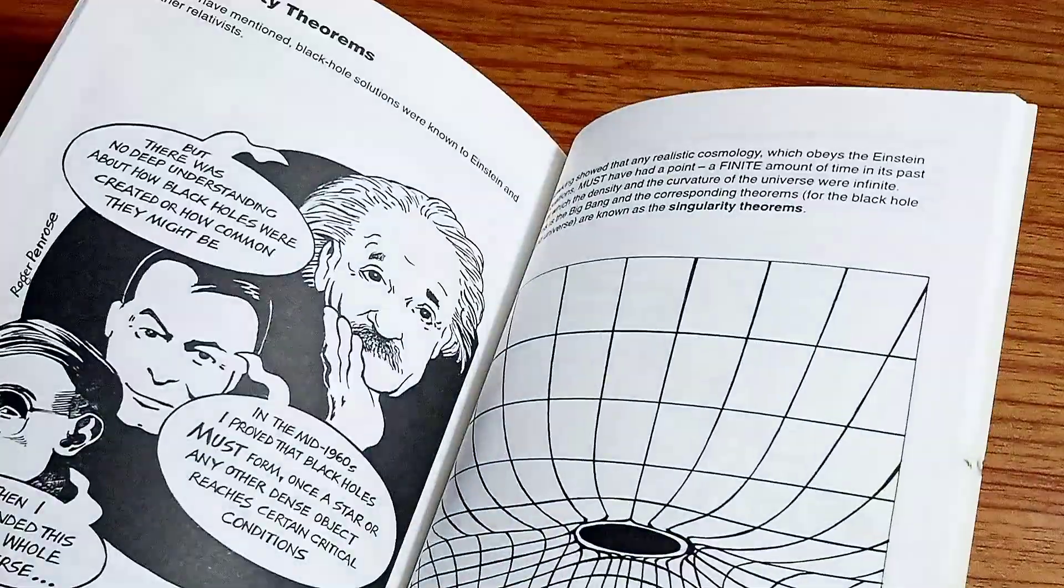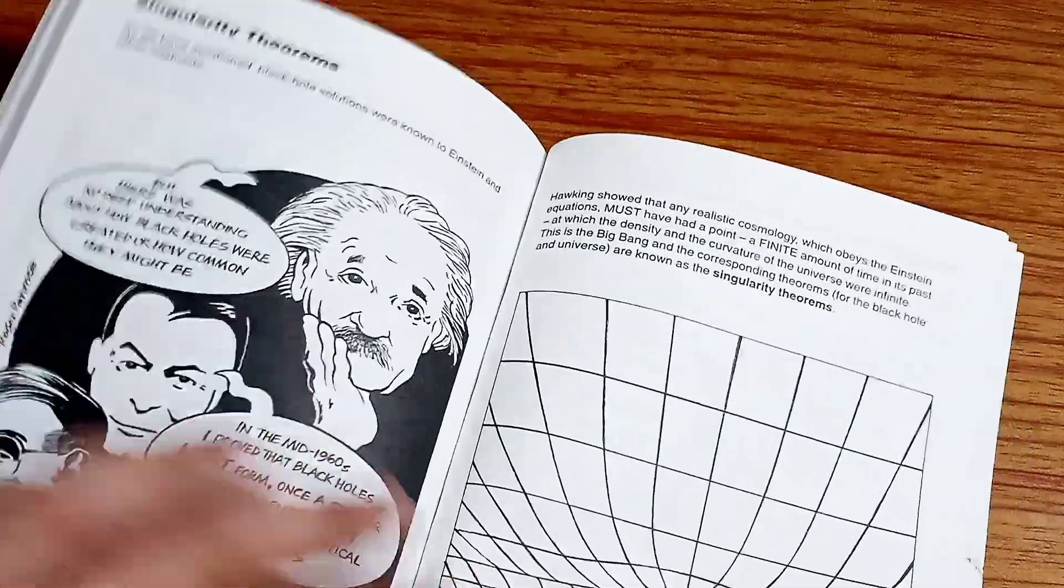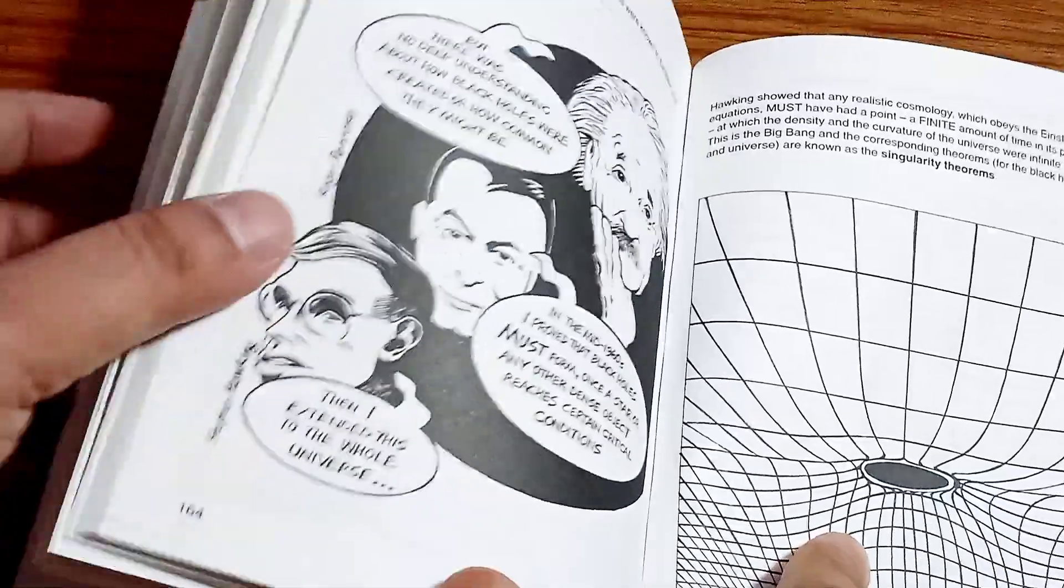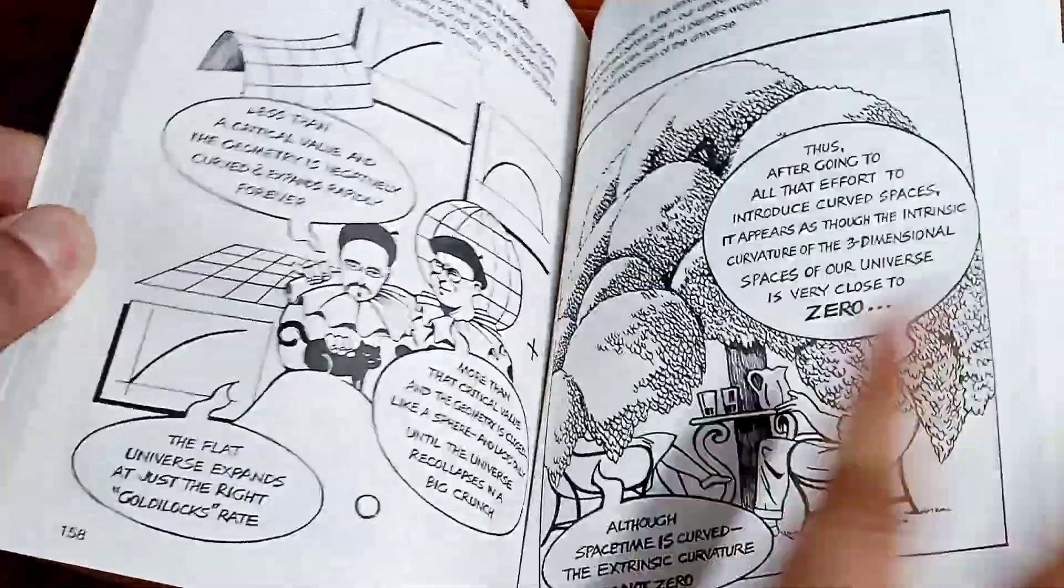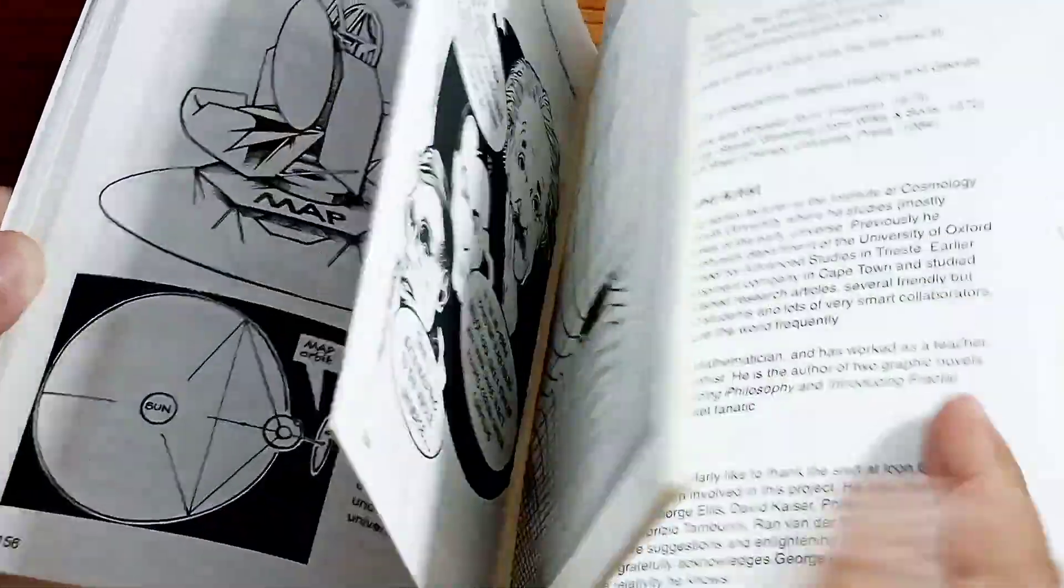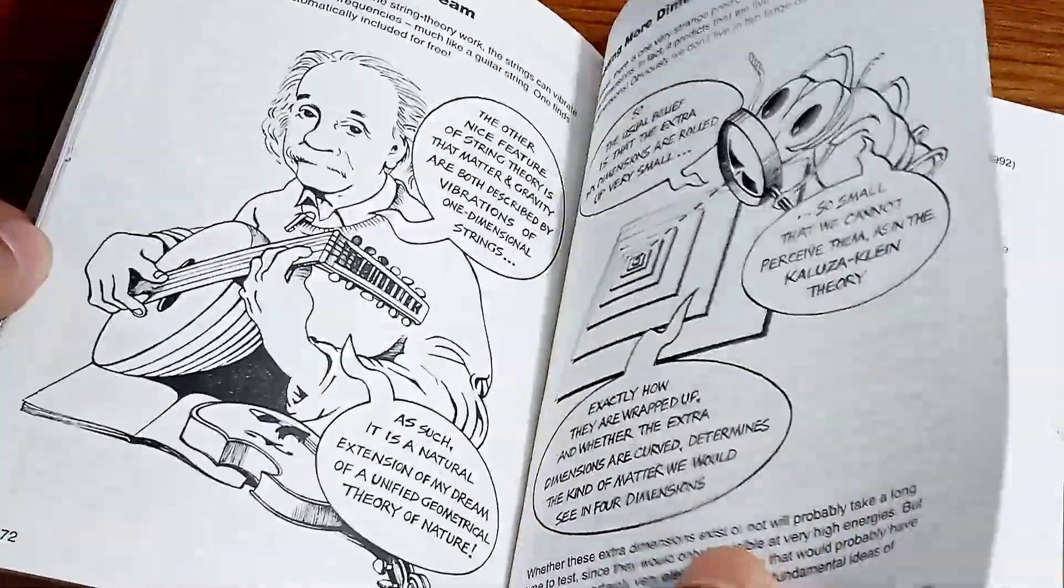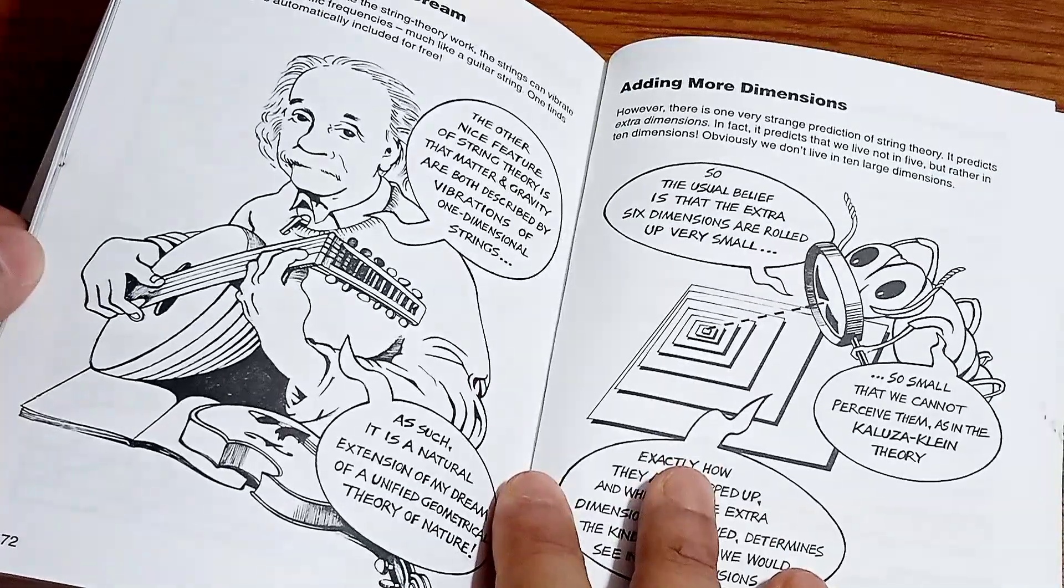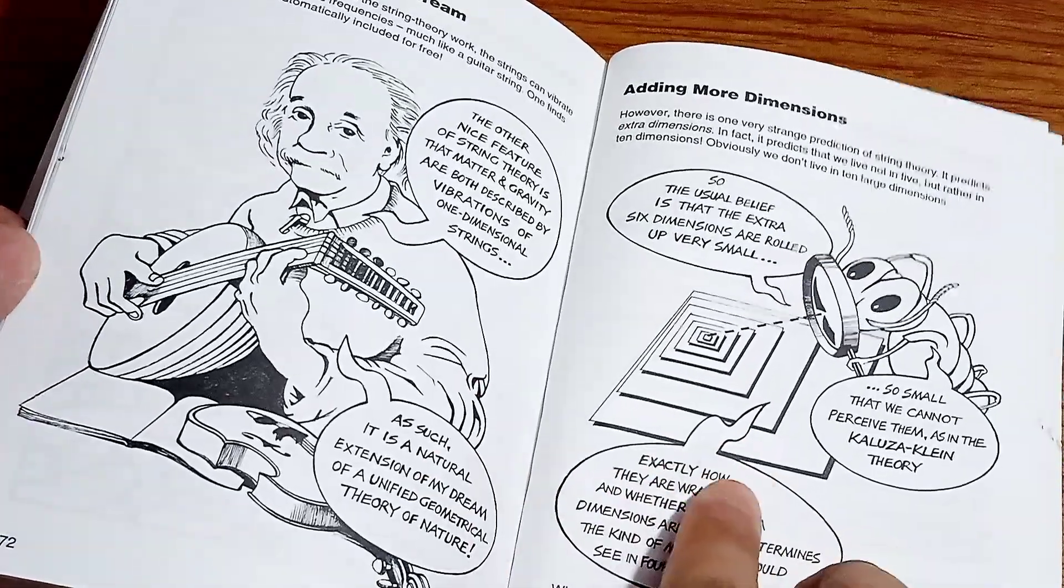And finally, it goes into singularity theorems, as the collapse of black hole, as Stephen Hawking finds it quite. The Goldilocks expansion rate, the further satellite probes. And finally, it ends around extending Einstein's dream, adding more dimensions into string theory.